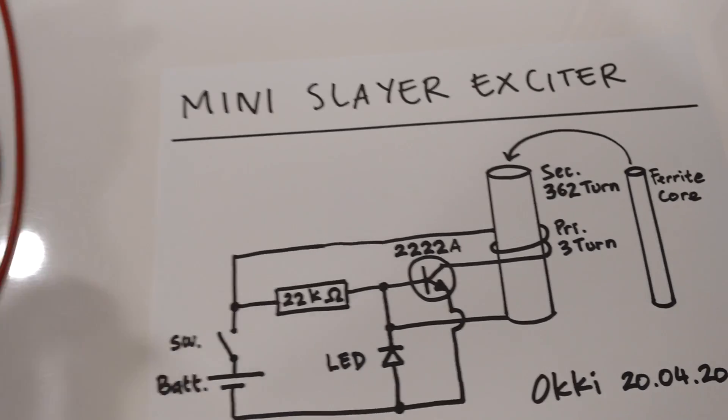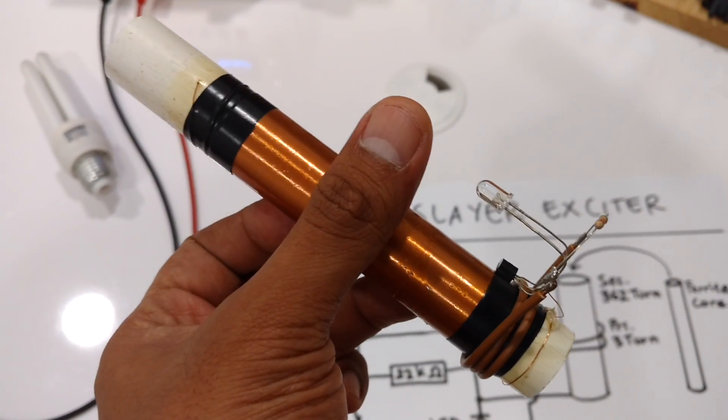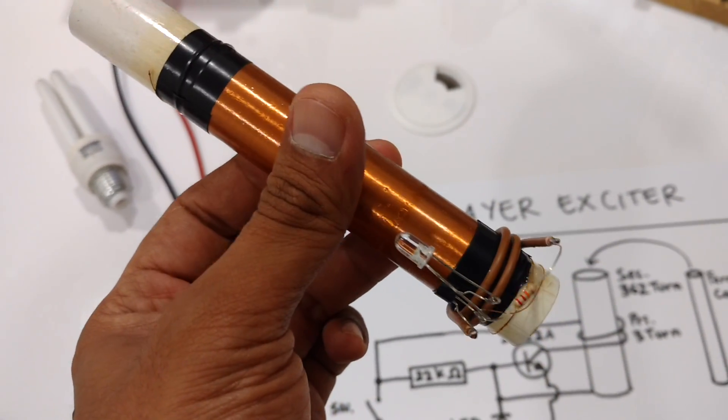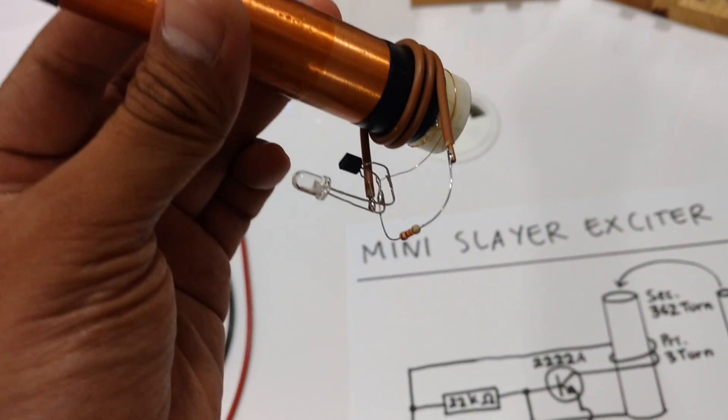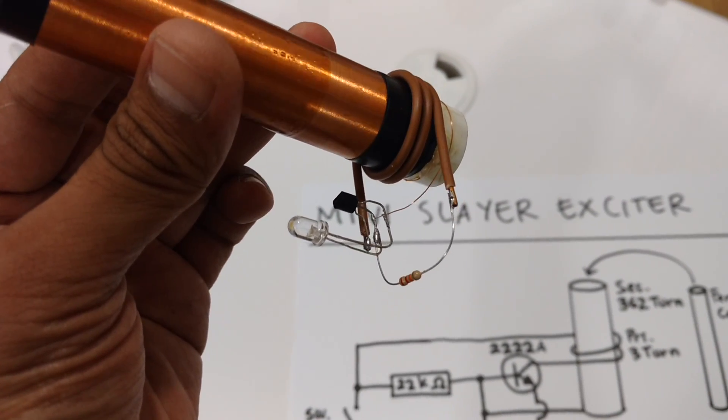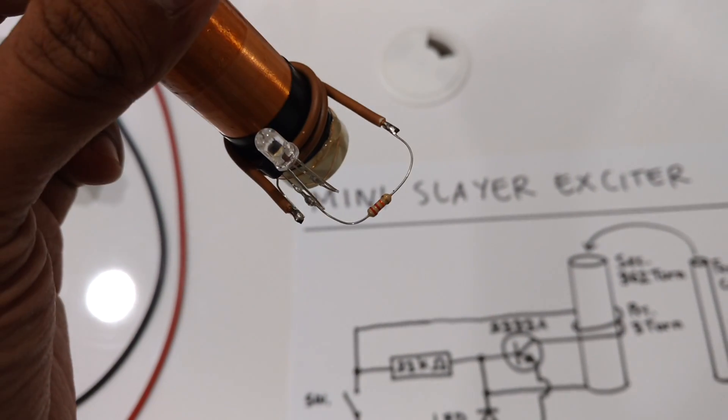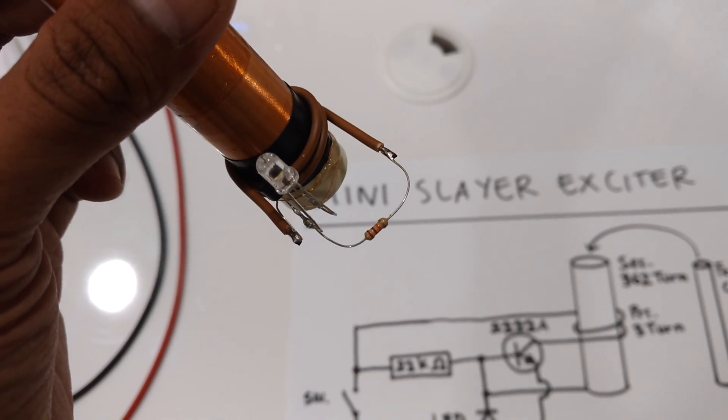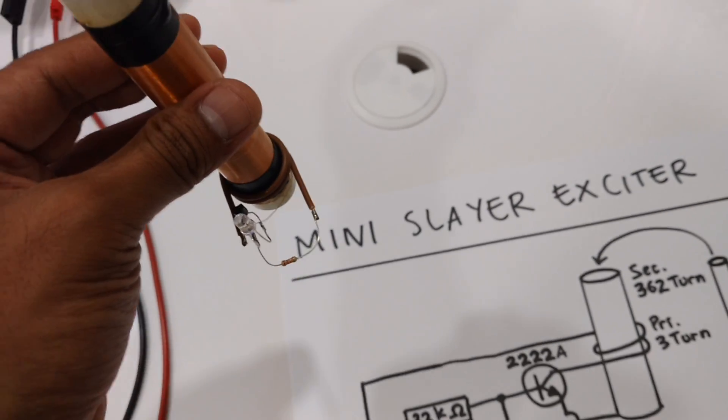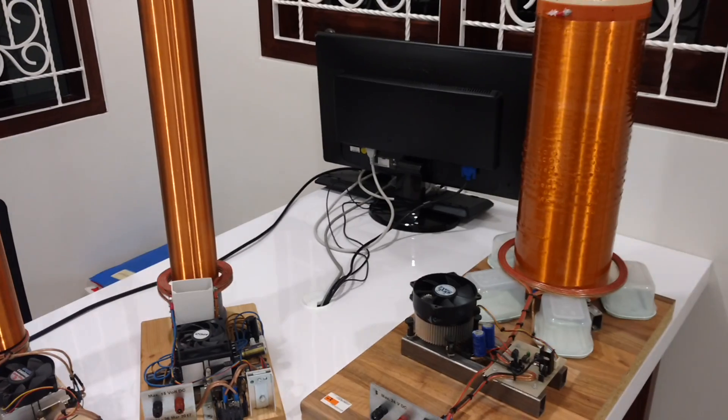This is my actual circuit. You see there is only one transistor, one LED, and one resistor. This is very small compared to my other Slayer Exciter.